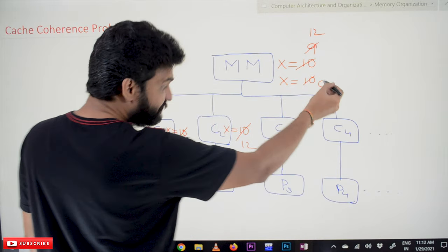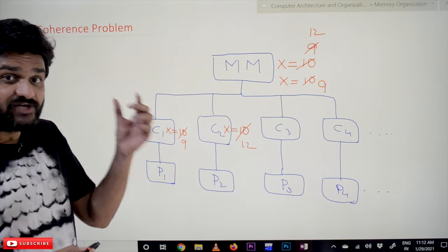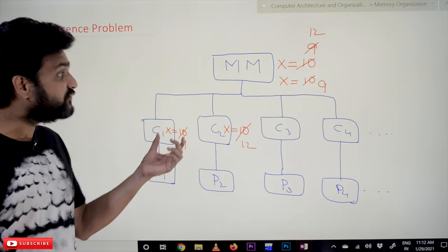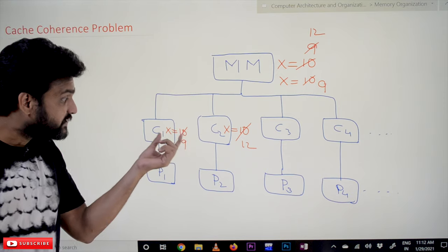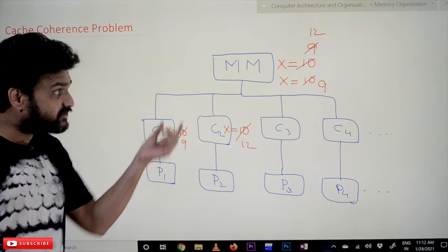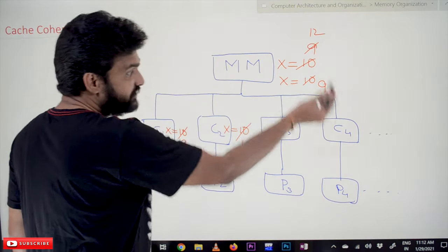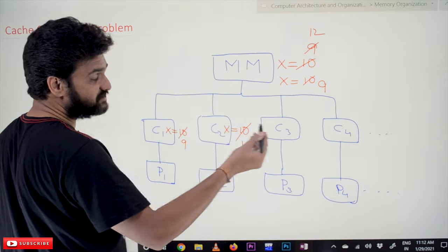If it immediately updates the value of X from 10 to 9, and after that if C2 has accessed it, the actual value of X is 9 because the value 10 has been updated by C1. So after updating, if C2 accesses it and it has incremented the value of 9 two times.